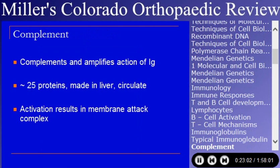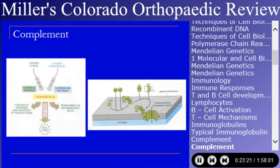Complement is a system that amplifies the action of immunoglobulins, currently thought to be approximately 25 proteins. They're made in the liver and circulate. Activation of complement results in a membrane attack complex, which destroys the cell. There are two complement pathways — the classical pathway and the alternate pathway — both ending up at the same place, activating a cascade that results in a channel or disruption of the cell membrane and death of the cell. It is seen commonly in inflammatory diseases such as rheumatoid arthritis.